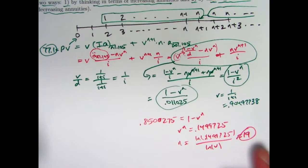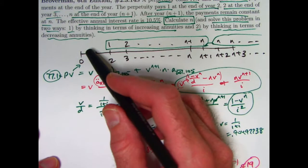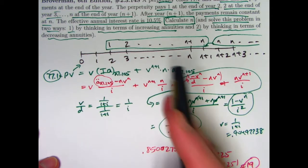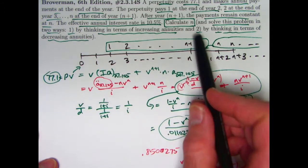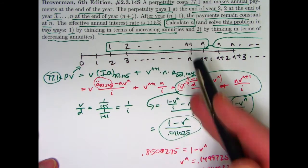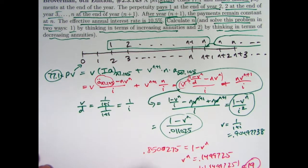All right. But that was kind of long. Not unbearably difficult, but difficult enough. Is method 2, by thinking in terms of decreasing annuities, easier? Yes. At least if you can easily recognize this original annuity as the difference of two annuities, a level annuity minus a decreasing annuity.